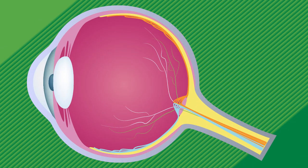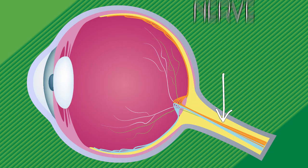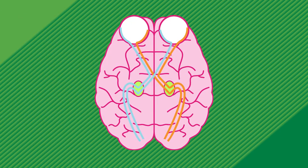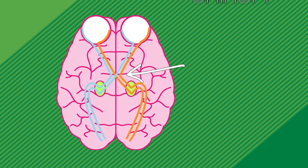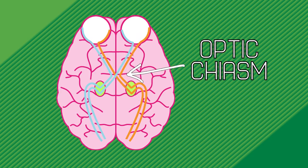All of the RGCs axons bundle together to pass through a single narrow channel in the retina. This bundle of fibers is called the optic nerve. It follows this path back to a structure called the optic chiasm. It's a criss-cross shape.